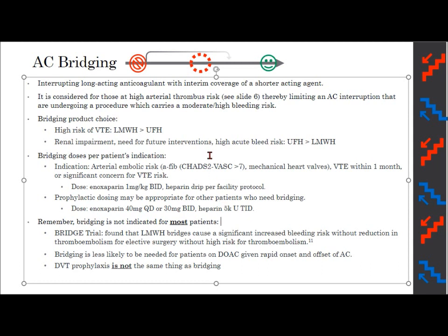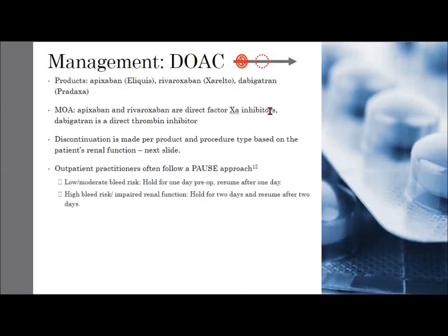Looking at our first anticoagulant — the DOACs: apixaban (brand name Eliquis), rivaroxaban (Xarelto), and dabigatran (Pradaxa). Apixaban and rivaroxaban are direct factor Xa inhibitors, whereas dabigatran is a direct thrombin (factor IIa) inhibitor.